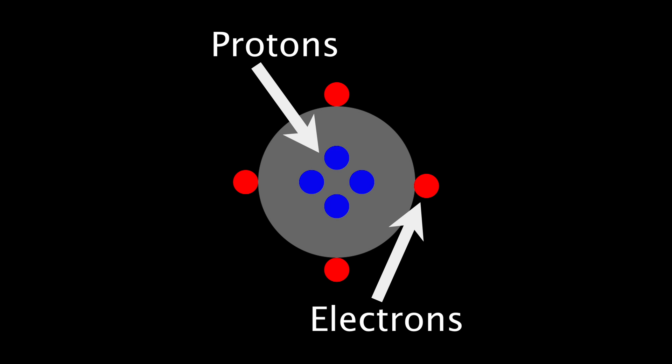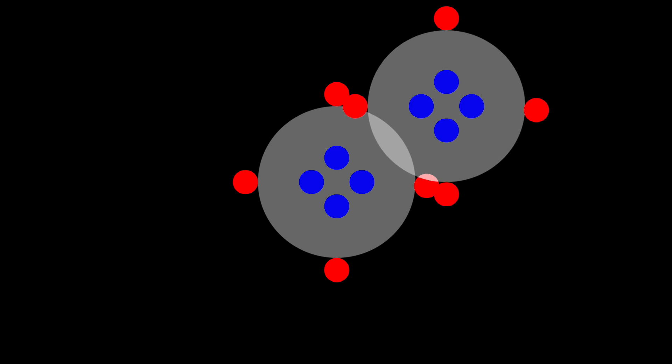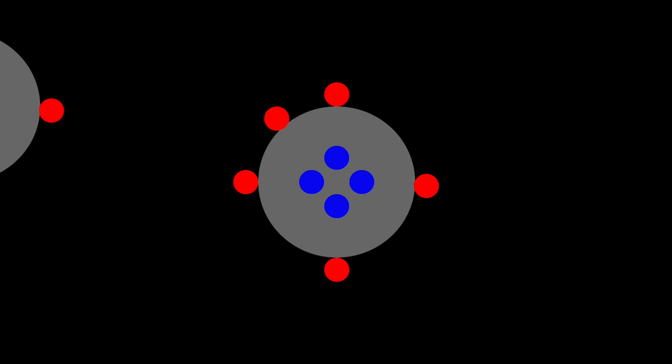Let's see what happens if the atom rubs against another atom. Some of its electrons might move off onto the other atom, or it might take some of the electrons instead. The atom is no longer neutral because it has a different number of protons and electrons. Now it is either positively charged, for having more protons, or negatively charged, for having more electrons.